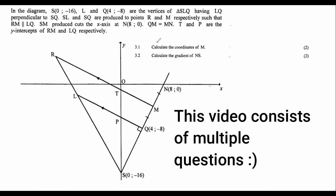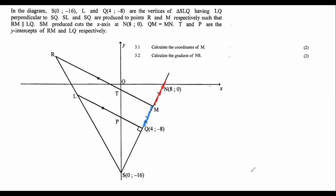The first question says calculate the coordinates of M. They've told us that this distance is the same as this distance, so what that means is that M is the midpoint. To calculate M, it's very easy — we just use the midpoint formula, which is (x1 + x2)/2 and (y1 + y2)/2.